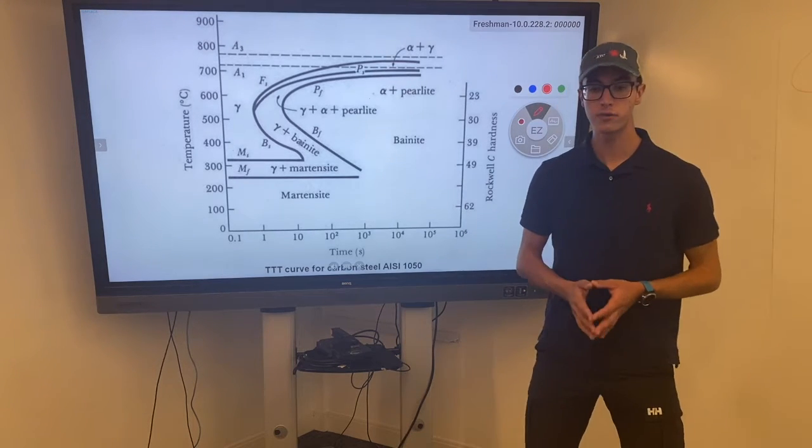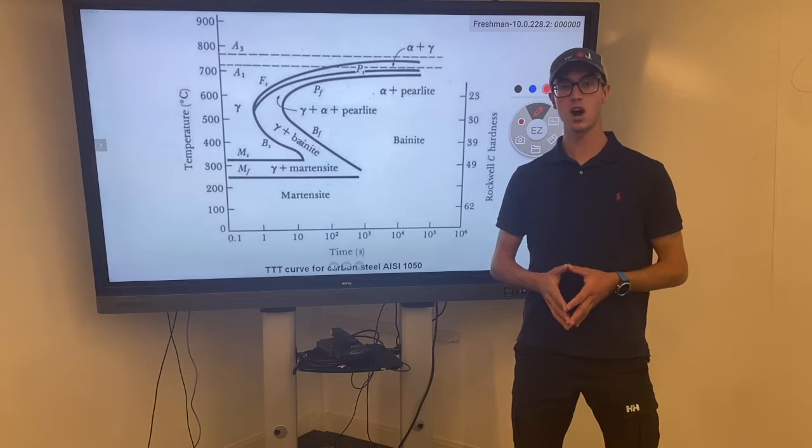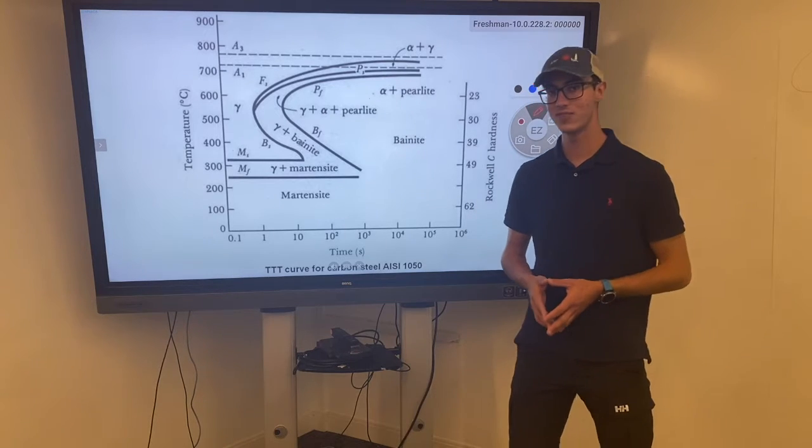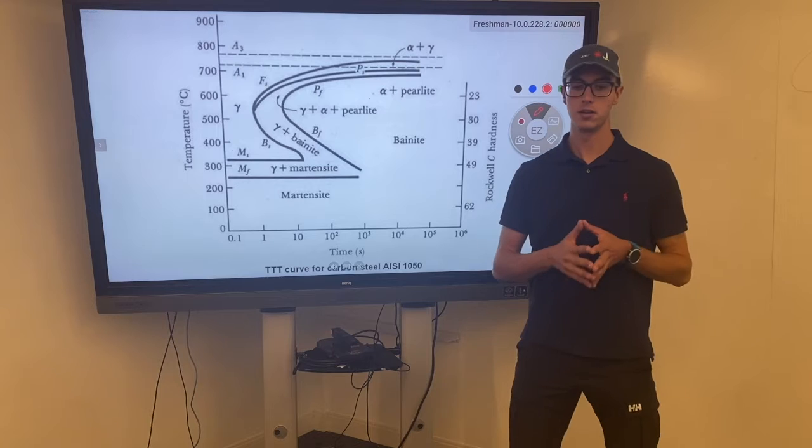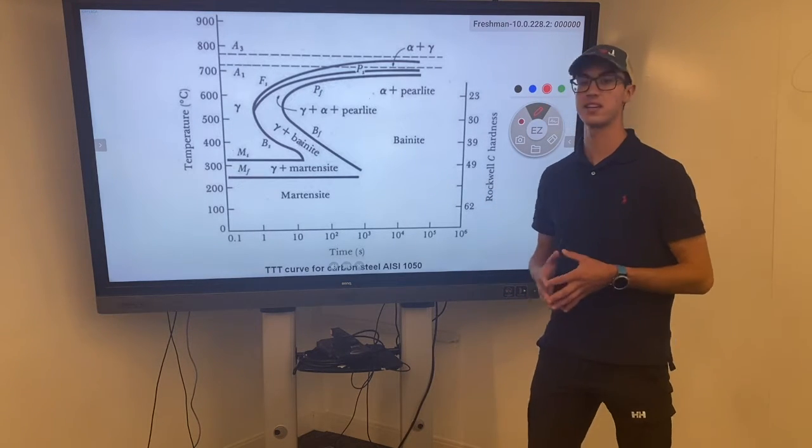We already assume you are familiar with the equilibrium phase diagrams for plain carbon steels and pearlite formation from our previous videos. But I'd like to first identify the micro constituents and phases present in this diagram.